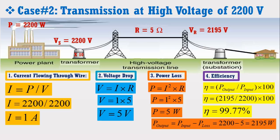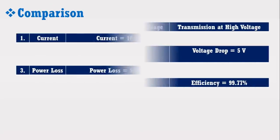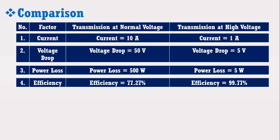Now we are going to compare the results of both cases in the form of a table. It can be noticed from the table that when transmission is carried out at normal voltage of 220 volt, it has higher magnitude of current, higher voltage drop, higher power losses and lowest efficiency. On the other hand, when transmission of power is carried out at high voltage of 2200 volt, the transmission line has a smaller amount of current, lower voltage drop, smaller power losses and highest efficiency.